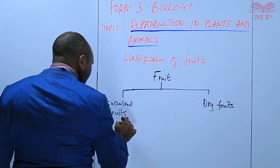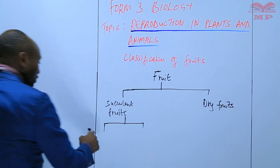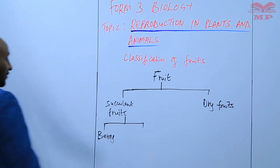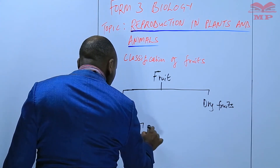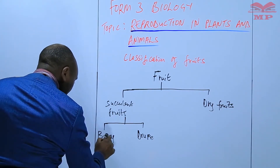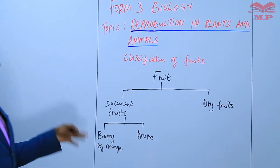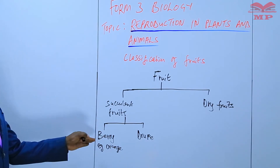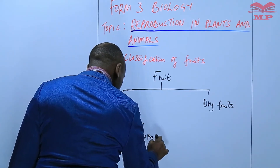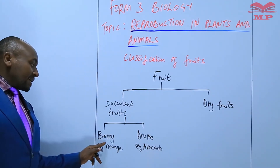In the succulent fruits, we subdivide them further into two. We have what we call berries — an example being an orange or a tomato. And we have drupes on the other side, with an example of an avocado. So both are succulent fruits, but one is a berry and the other is a drupe.